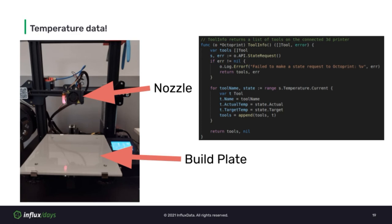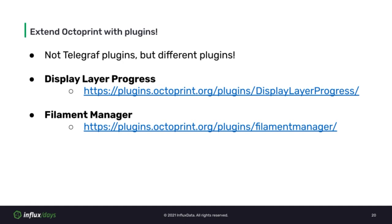Keeping an eye on the temperature is important, and it is something that can be easily retrieved from the OctoPrint API. Following the same pattern as before to get the state data, we can get the temperature data and upload it to the accumulator. We need the current temperature and the target temperature for both tools — the nozzle and the build plate.